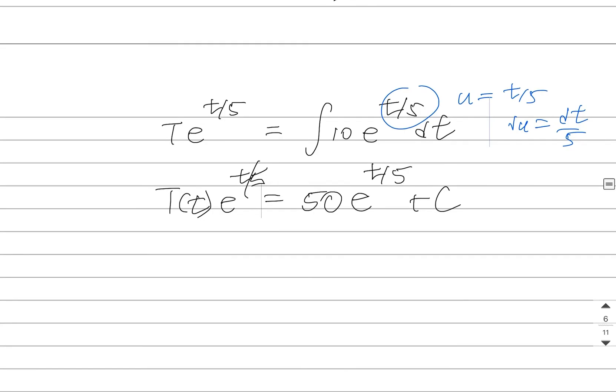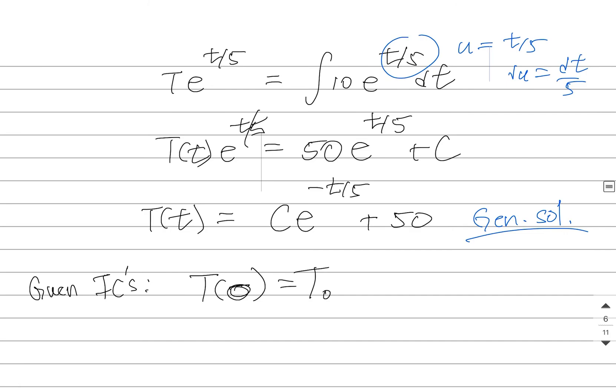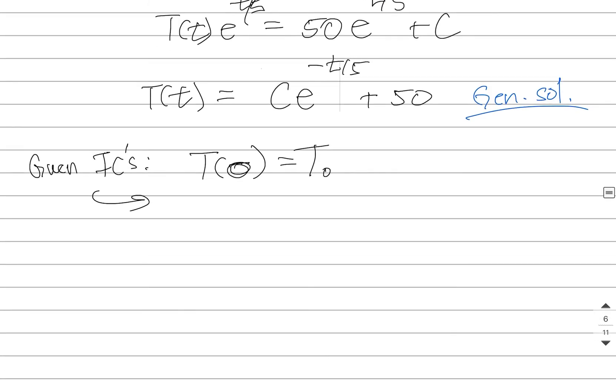So I'm not quite done here. I'm going to isolate t and I'll get ce^(-t/5) + 50. This is the general solution of the differential equation. So if somebody supplies us with some initial conditions at time zero, let's say, and let's say it's some temperature, we can apply them.